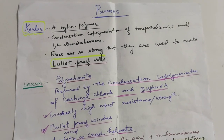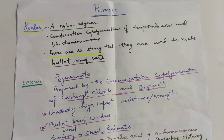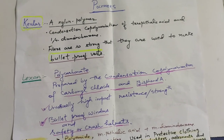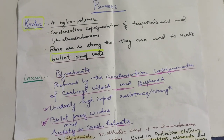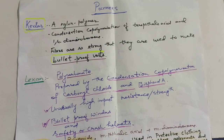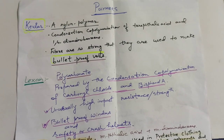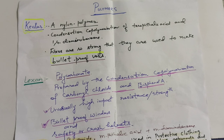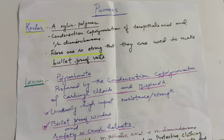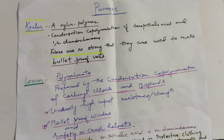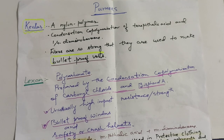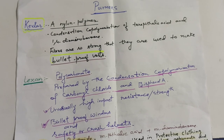Lexan is a polycarbonate prepared by condensation co-polymerization of carbonyl chloride and bisphenol A. It has unusually high impact strength and is used to prepare bulletproof windows and safety or crash helmets.